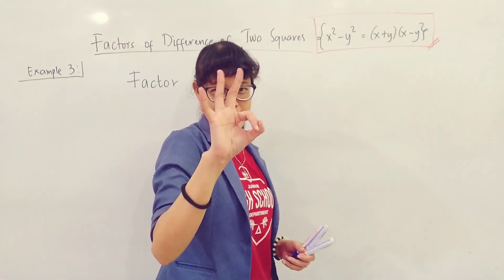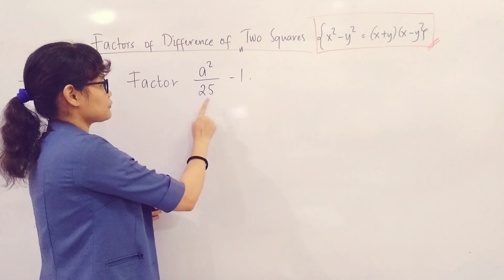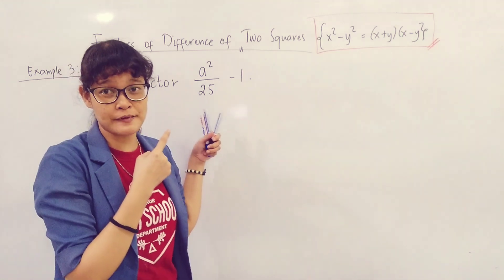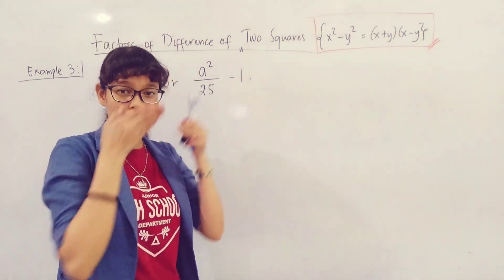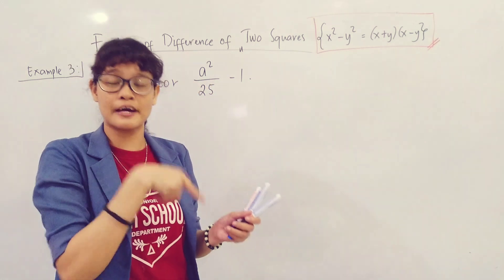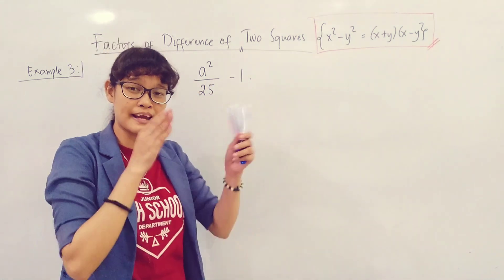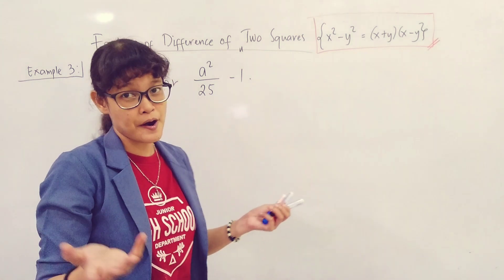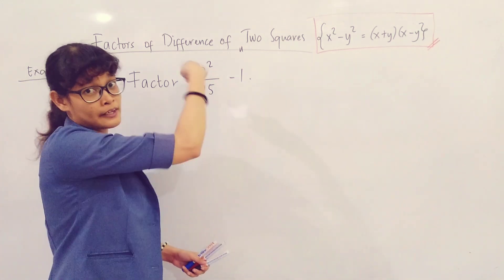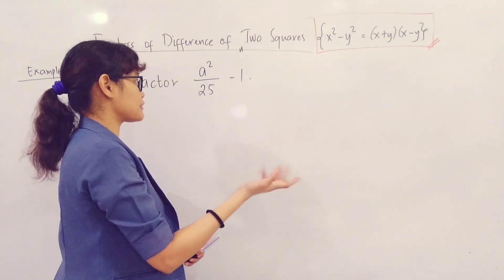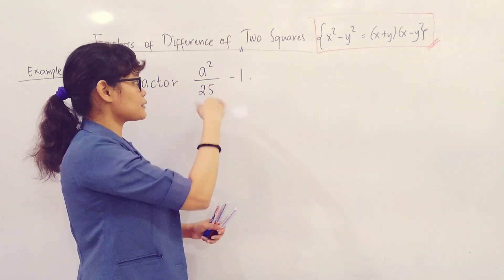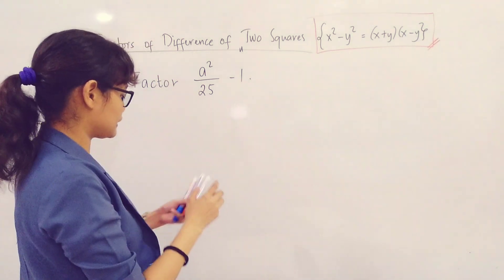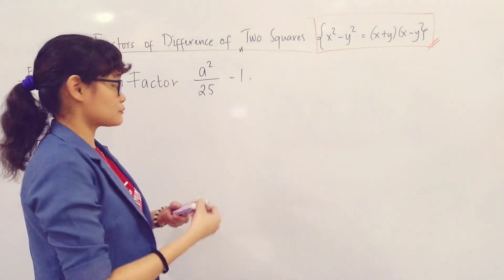Let's have our third example. Factor A squared over 25 minus 1. This is DTS. How will you know if the given fraction is a perfect square? Look at its numerator and its denominator. Check if the numerator is a perfect square and the denominator is a perfect square. If they're both perfect squares, therefore that fraction is a perfect square number. A squared is a perfect square, 25 is a perfect square, so A squared over 25 is a perfect square. 1 is also a perfect square, minus sign - so this is DTS.